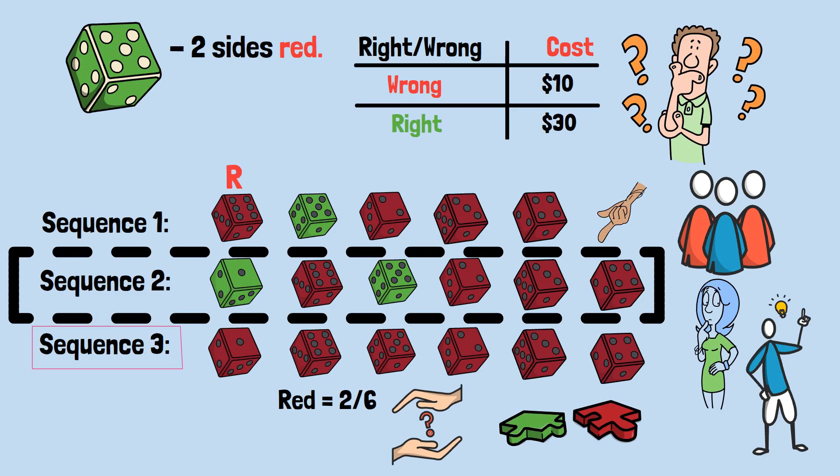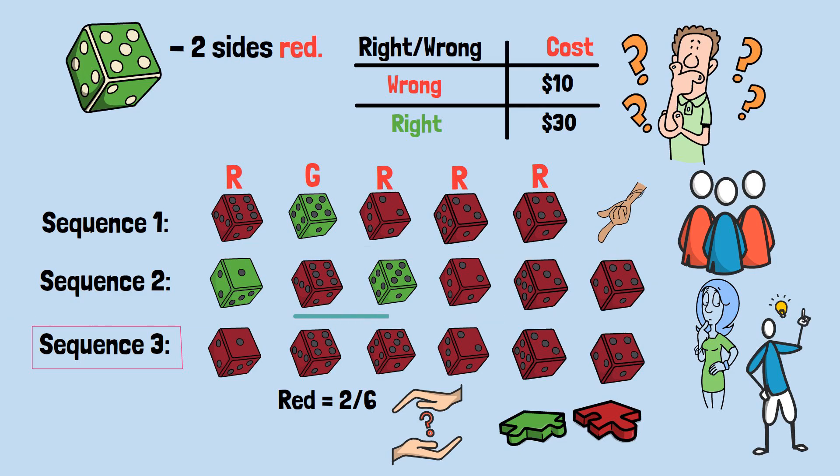Look at this. Red, green, red, red, red. That's sequence 1. Red, green, red, red, red. That's also the last five throws of sequence 2. Why would it be easier to add an additional throw to make the sequence more likely? It isn't.